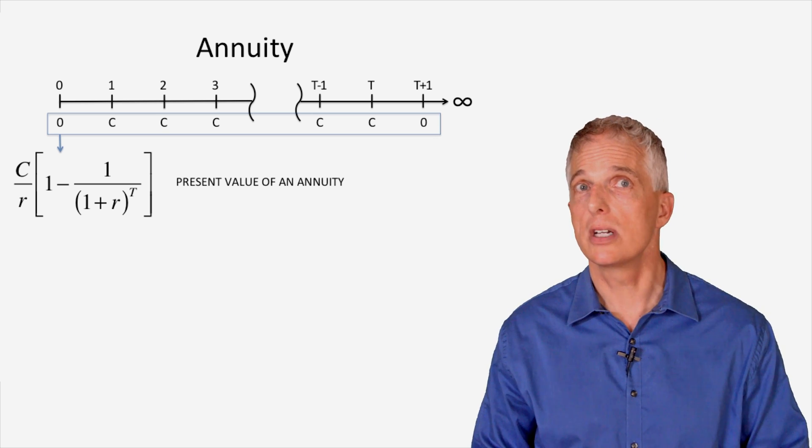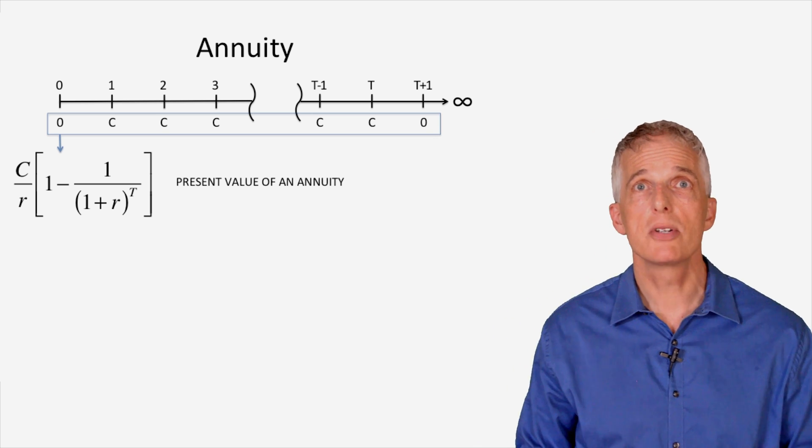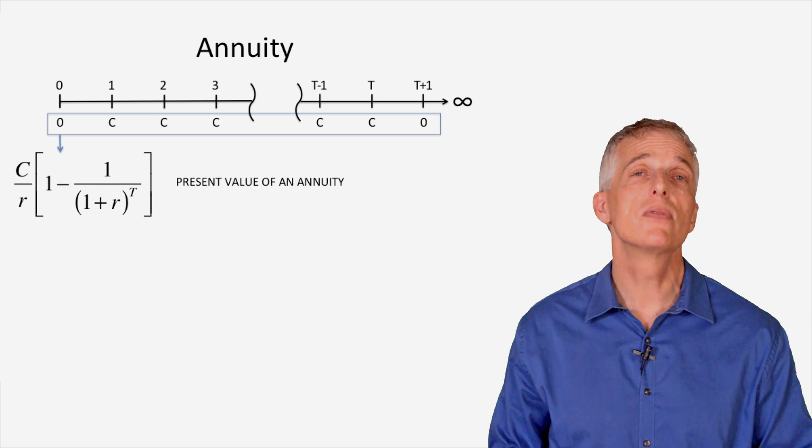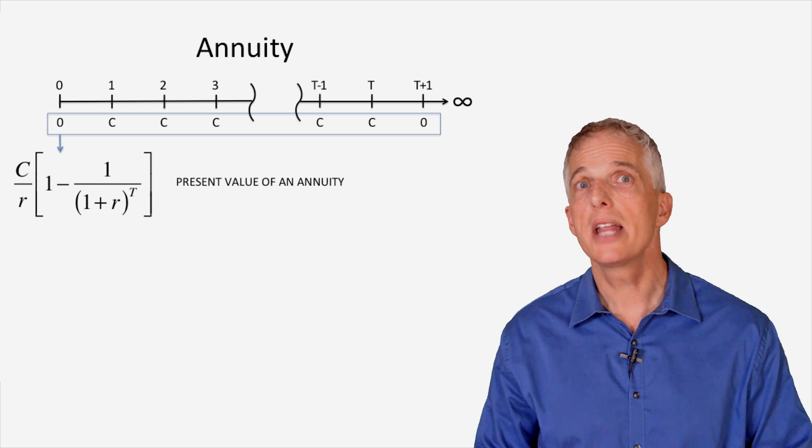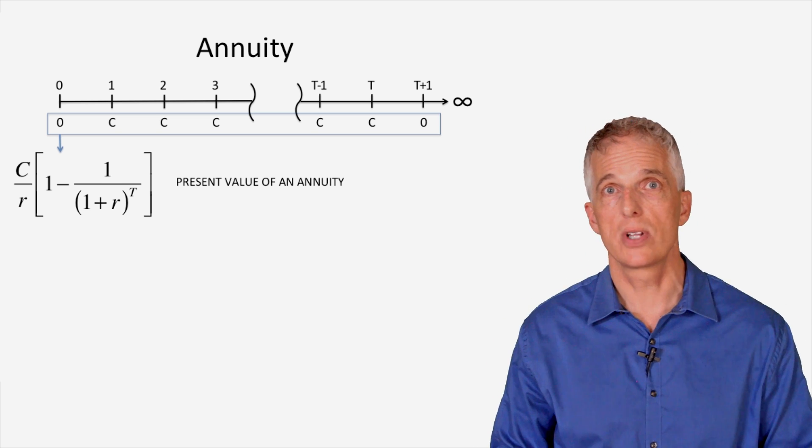To calculate the present value of an annuity, we need to know the promised cash flow C, the prevailing interest rate R, and the number of periods over which the cash flow is paid, T.